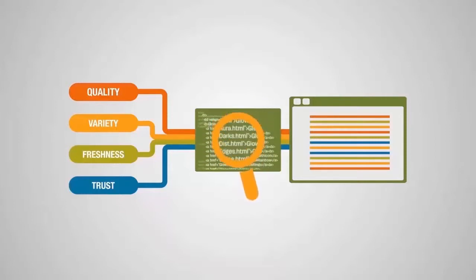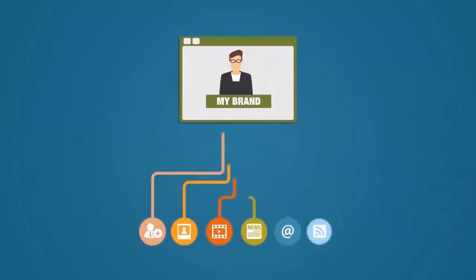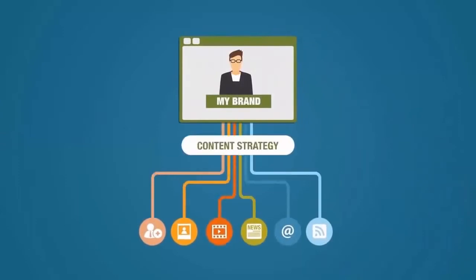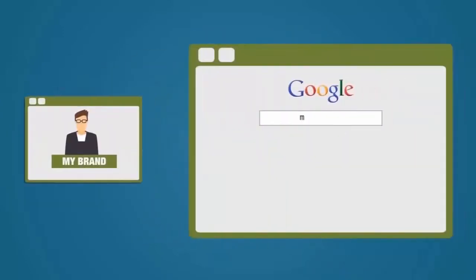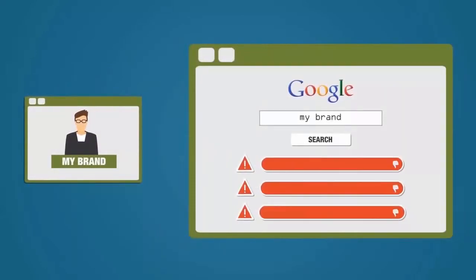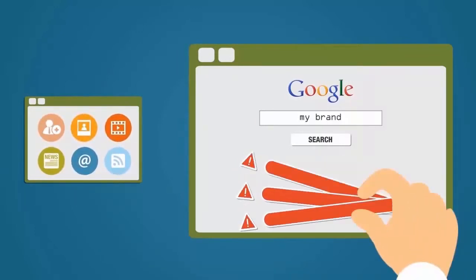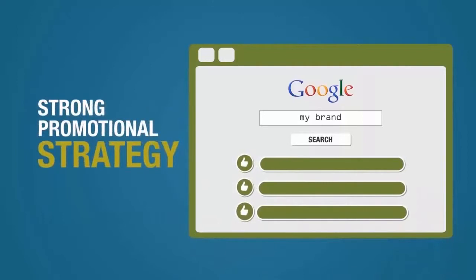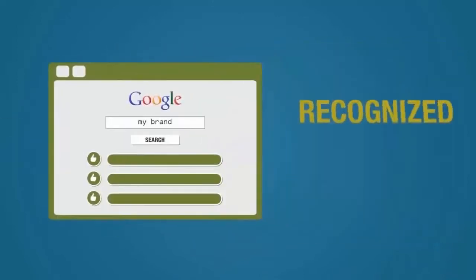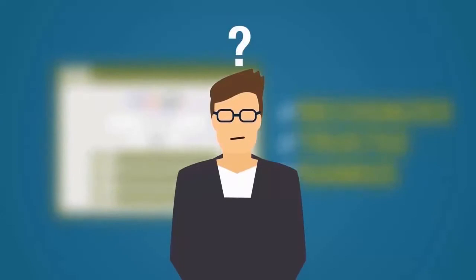So in order to control the search results for your name, brand, or product, you need to have an online content strategy. Without presenting new, higher quality, more trusted content to the search engines, there's no effective way of replacing the negative information they currently display. And in order to give your new content the needed authority to overtake what's already there, you need a strong promotional strategy to get that content recognized, trusted, and ranked.